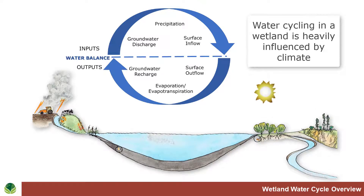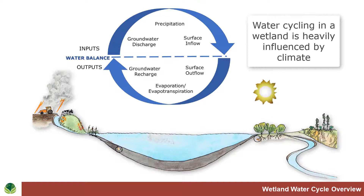There may be storage of water in the form of ice during the wintertime. So air temperatures during the spring will affect the rate at which the ice melts and the rate at which, once it's melted,